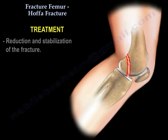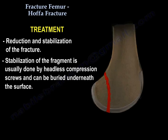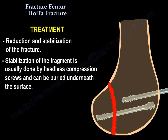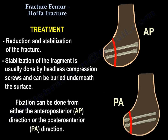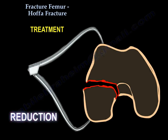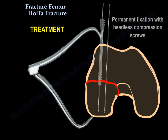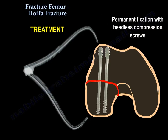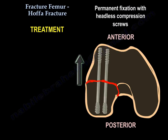Treatment involves reduction and stabilization of the fracture. Stabilization of the fragment is usually done by headless compression screws, which can be buried underneath the surface. The fixation can be done from either the anterior-posterior or posterior-anterior direction. Here you can see the technique of reduction and temporary fixation with K-wires, and permanent fixation with headless compression screws from either direction.